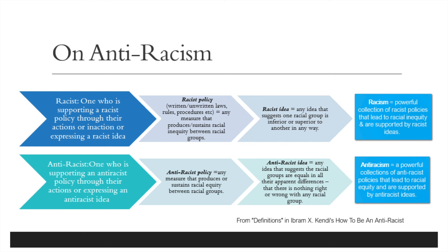If we look at schooling today in the U.S., we have all heard the expression 'the achievement gap.' Many of us are also familiar with critiques of it — looking instead at the education debt or the opportunity gap. But regardless of what we call it, we see inequitable outcomes between different racial groups, class groups, linguistic groups, and ability groups — differential outcomes of schooling in the United States. If we take Kendi's idea and extend it to think about oppression more broadly, we can see that education produces inequitable outcomes.